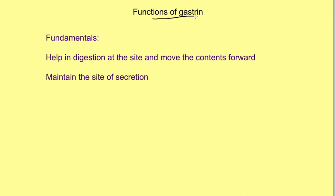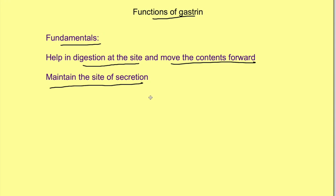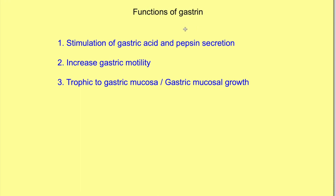Now let's see the functions of gastrin. For remembering functions of any gastric hormone, keep this in mind: gastrin helps in digestion at the site where it is released, moves the contents forward, and maintains the site of secretion. So gastrin stimulates gastric acid and pepsin secretion, increases gastric motility, and is trophic to the gastric mucosa — meaning it causes gastric mucosal growth.